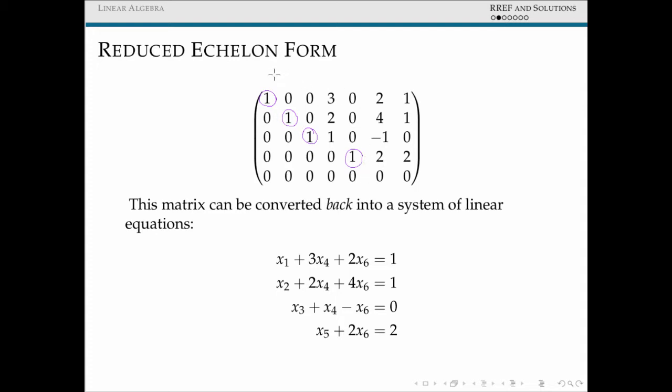So these columns correspond, in this example, to the variable x1, x2, x3, and x5. So those are all of our pivot positions and pivot columns.